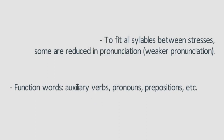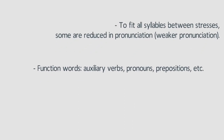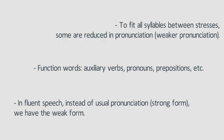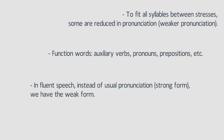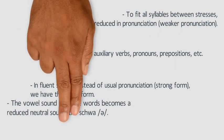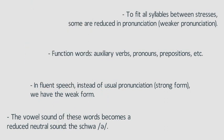This typically happens to function words — that is, auxiliary verbs, pronouns, or prepositions, among others. In fluent speech, instead of the usual pronunciation of these words, called the strong form, we will have the weak form, where the vowel sound becomes a reduced neutral sound: the schwa.